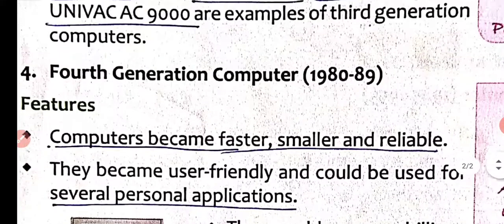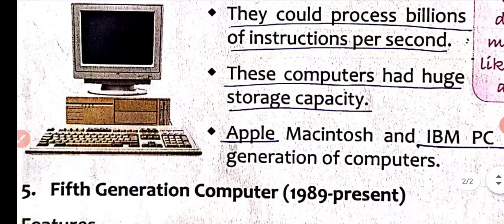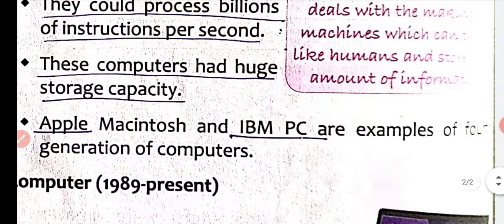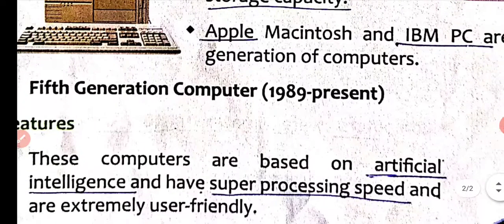Fourth generation computers can process billions of instructions per second. They have huge storage capacity. Apple Macintosh and IBM PC are examples of fourth generation computers. IBM stands for International Business Machines and PC stands for Personal Computer.